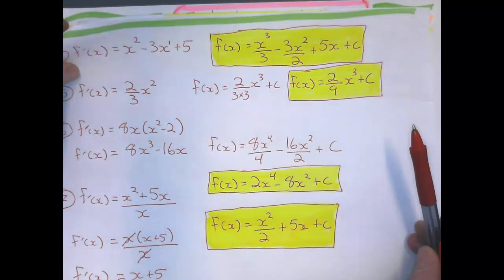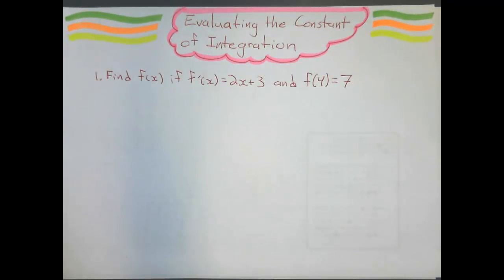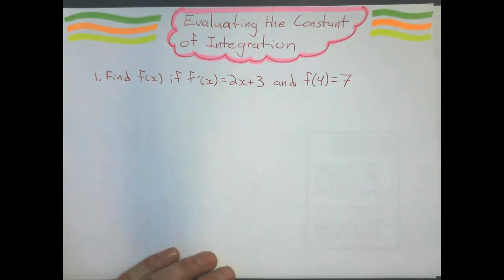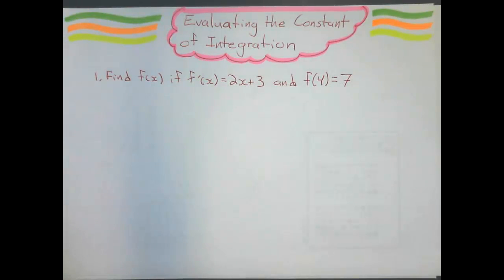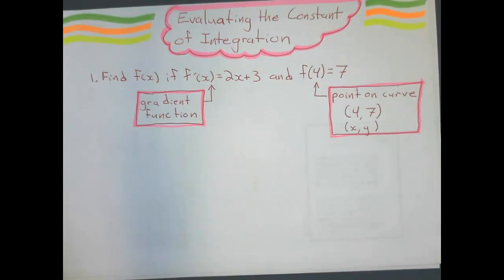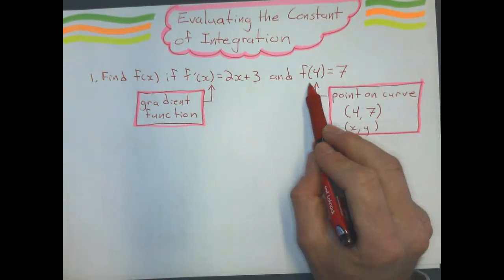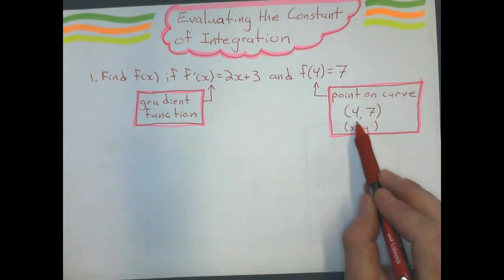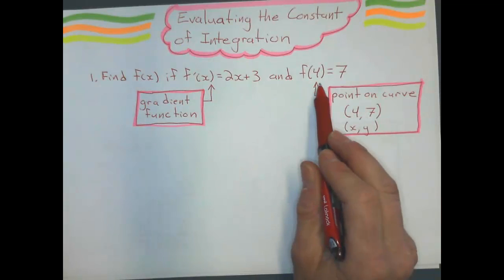Let's look at this first example. What I have right here is the gradient function, and what I have right here, even though it doesn't say it, is a point on the curve. So we know f'(x) is a gradient function and this f, that's a point on the curve. My x coordinate would be 4 and my y coordinate would be 7.